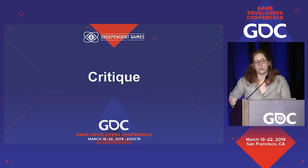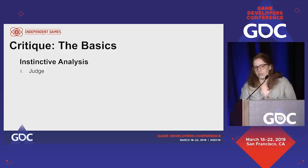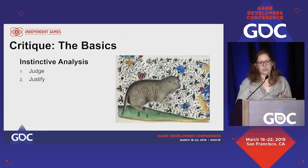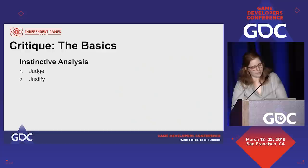Critique is a tool for finding the strengths and weaknesses of an image. In our instinctive way, we critique things by seeing an image and immediately judging it. You have an opinion the first second you see the picture, and then you justify your opinion. You might say something like, this picture's no good because I think that's a cat and that's not a cat's face.